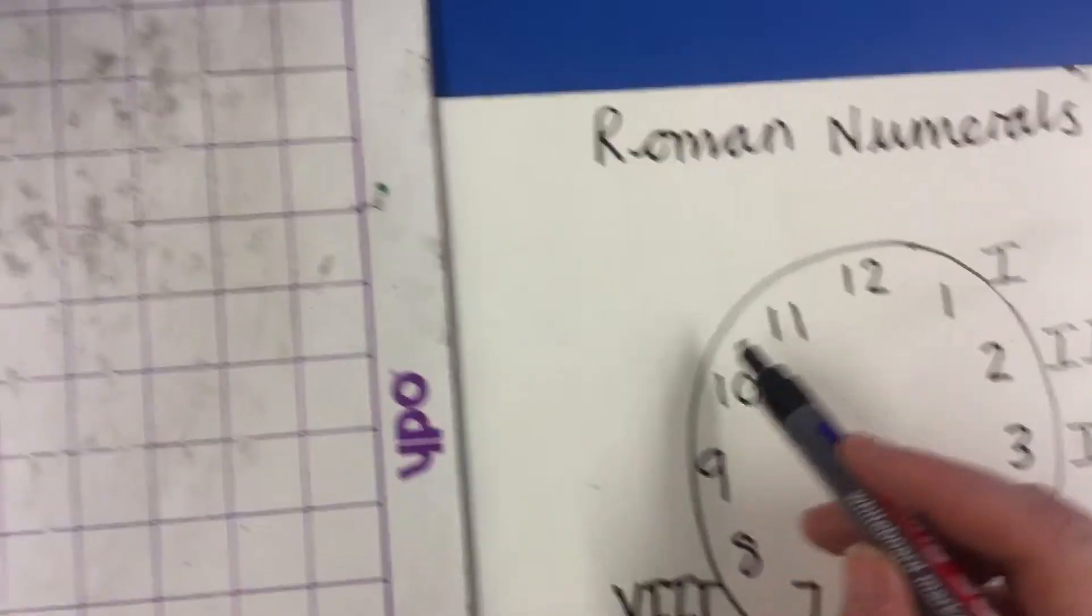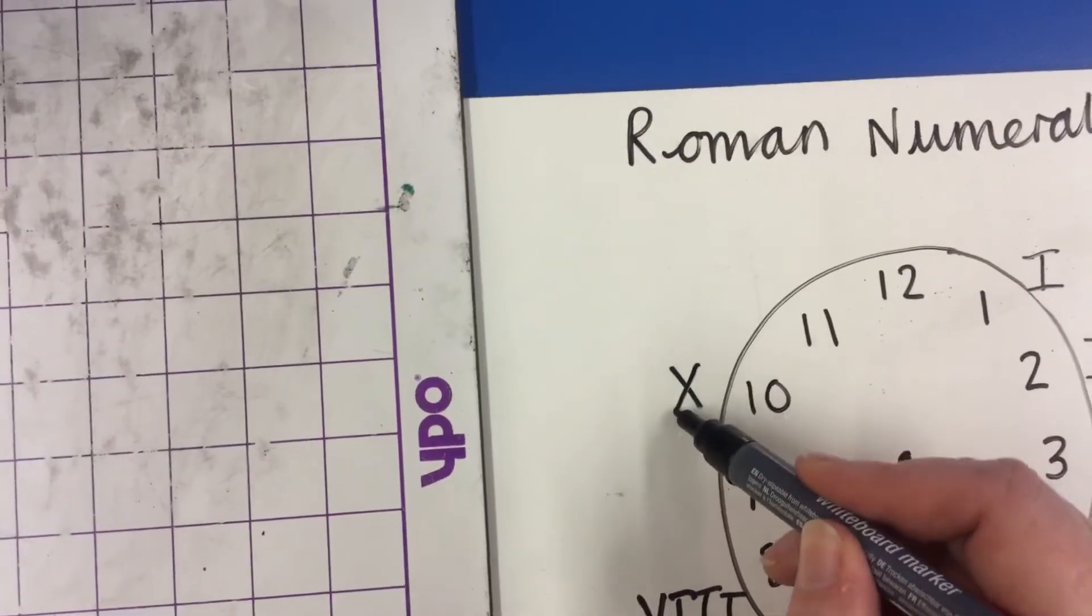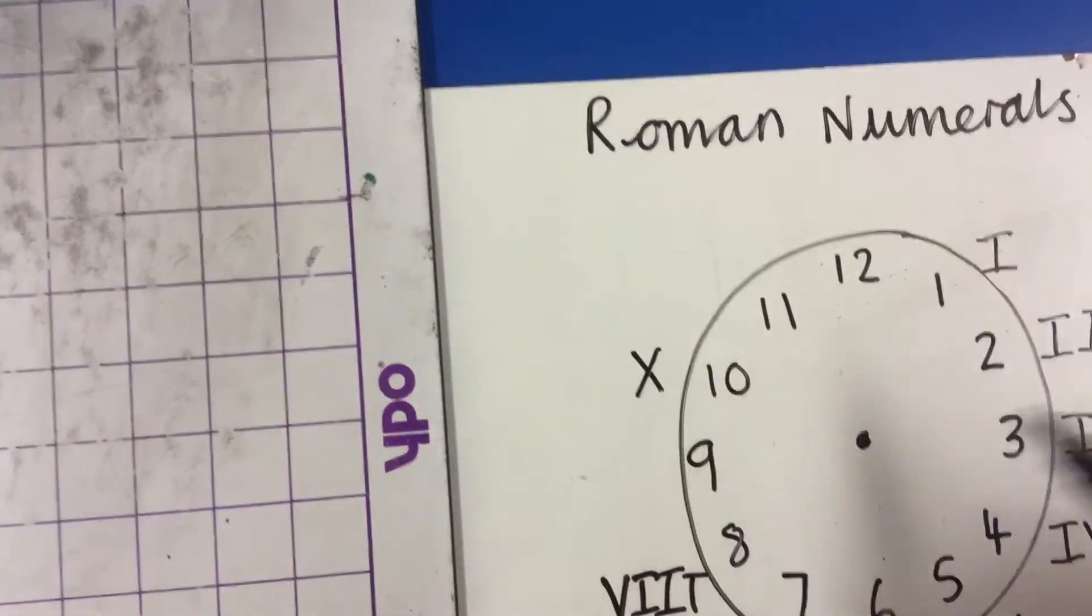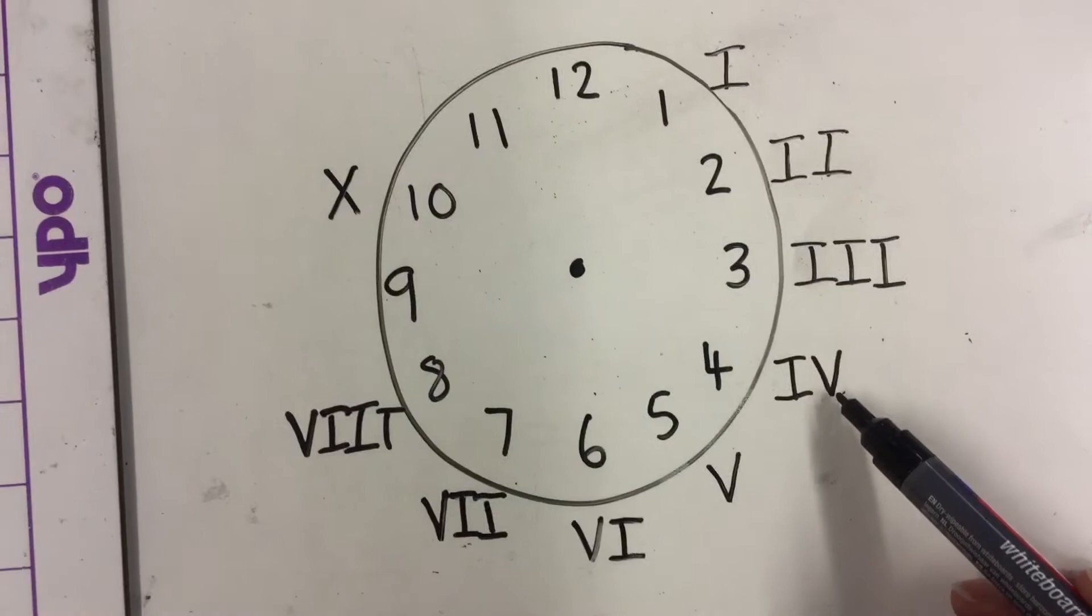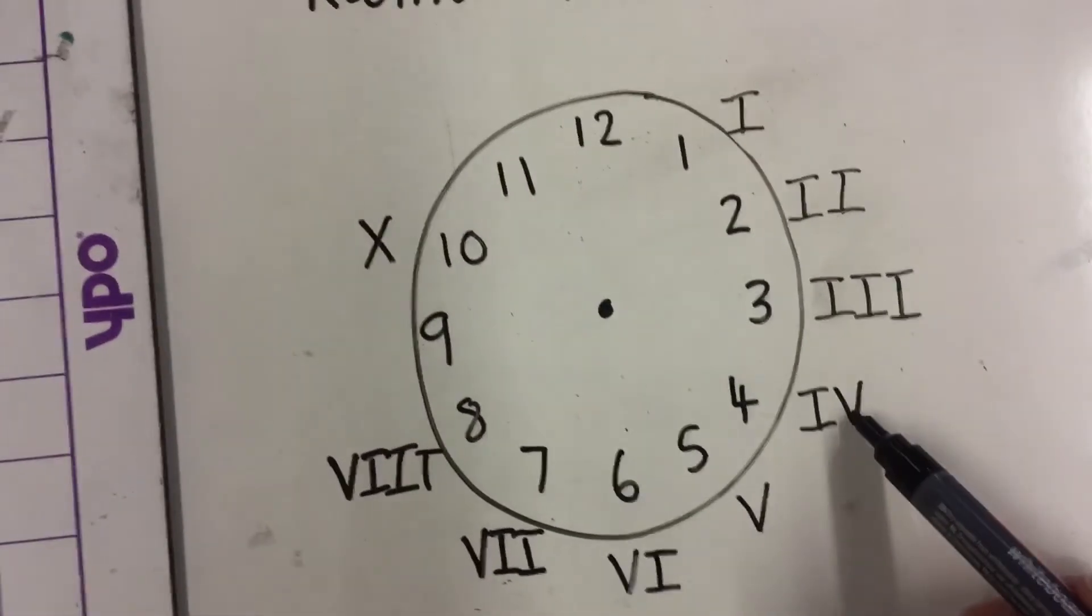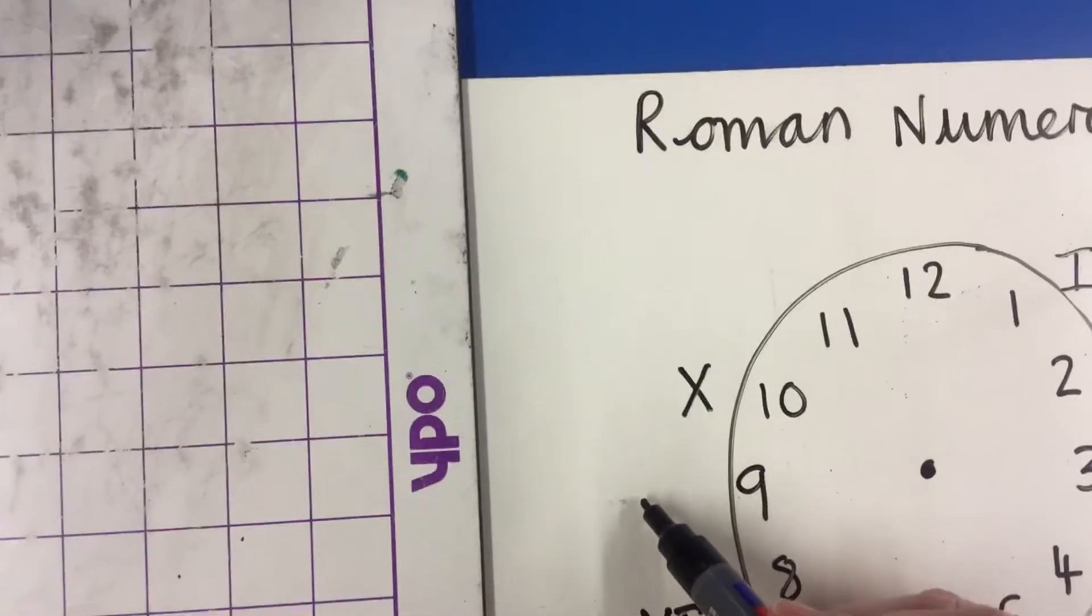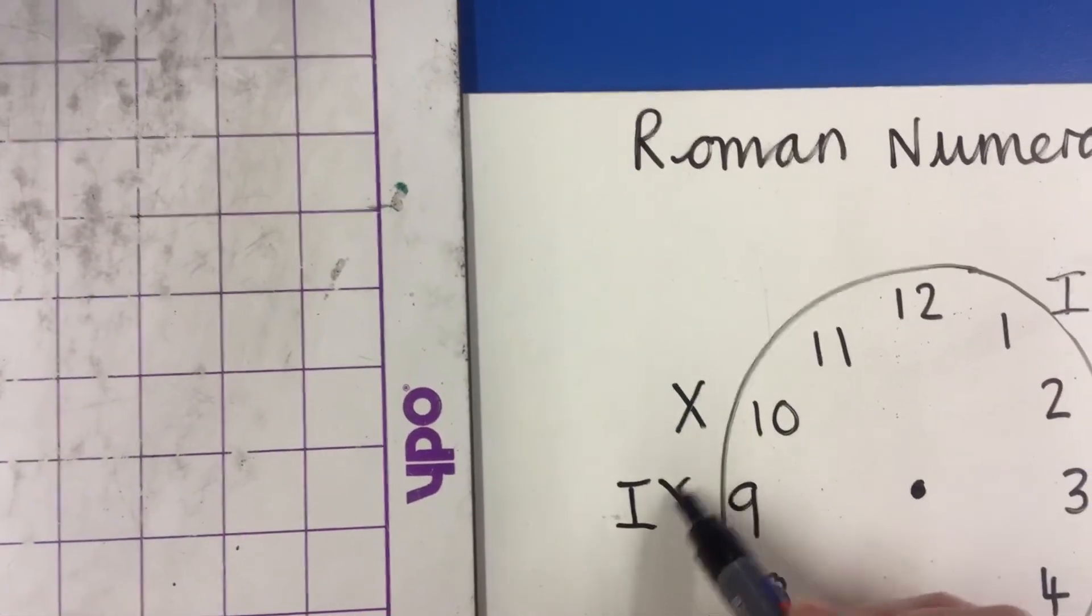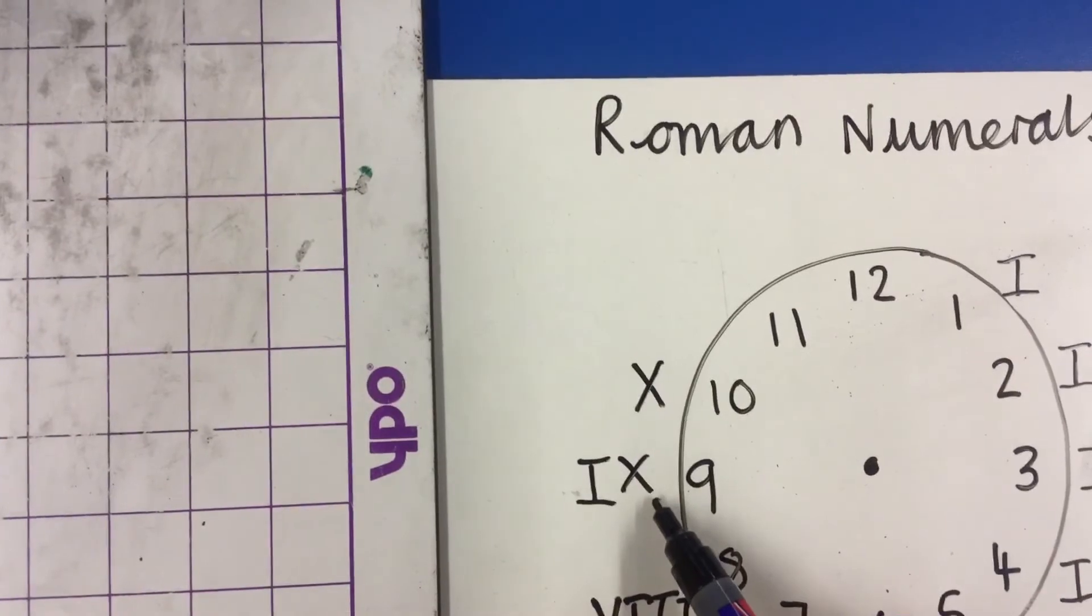9 looks at the symbol for 10. The symbol for 10 is an X. So 9, just like when we looked at 4, has an I in front of this to represent 1 less than the symbol coming next. So for this one, we go I, X to show 1 less than 10.